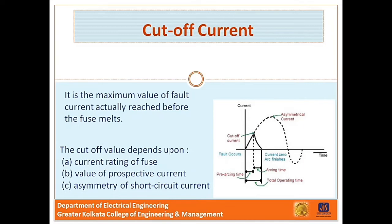The outstanding feature of fuse action is the breaking of the circuit before the fault current reaches its first peak. This gives the fuse a great advantage over the circuit breaker, since the most severe thermal and electromagnetic effects of short circuit currents are not experienced with a fuse. The circuits protected by a fuse can be designed to withstand a maximum current equal to the cut-off value. This consideration, together with the relative cheapness of fuse, allows much saving in cost.